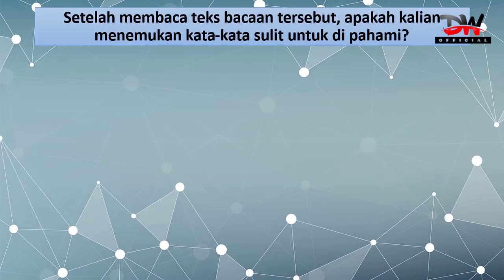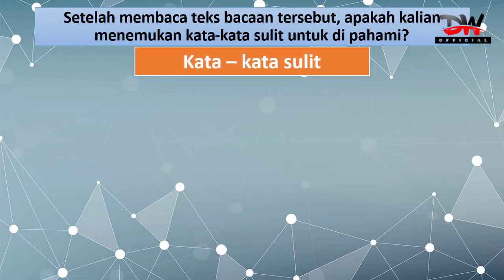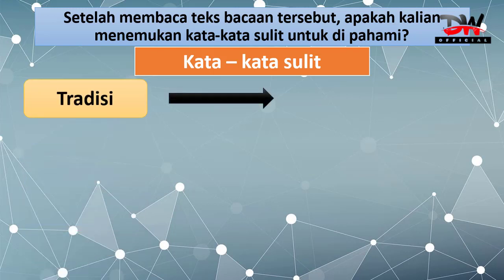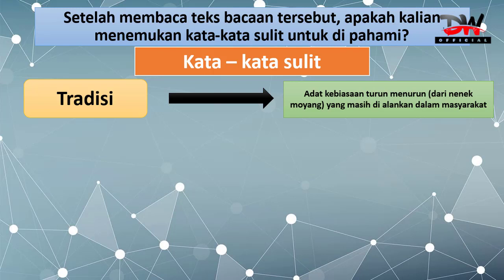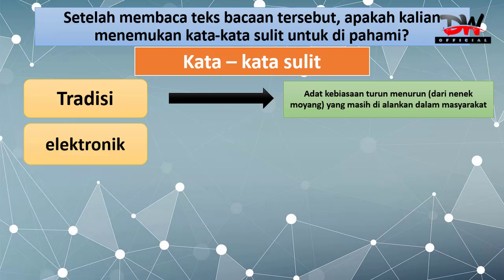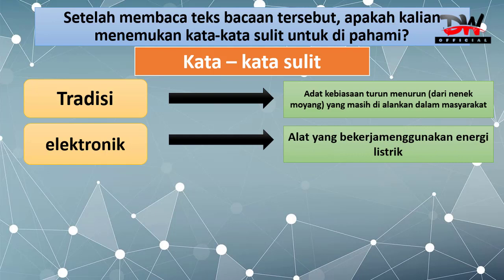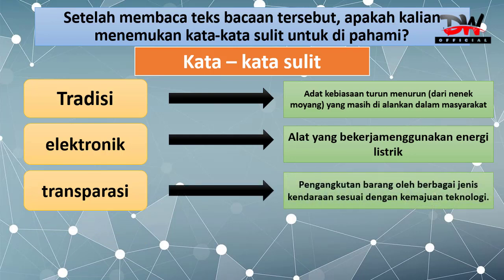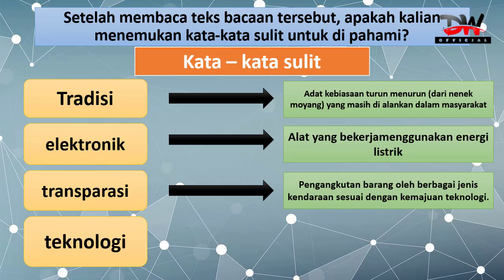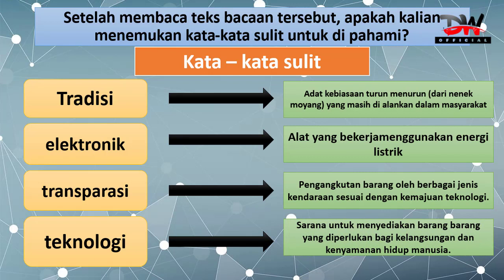Setelah membaca teks bacaan tersebut, apakah kalian menemukan kata-kata sulit untuk dipahami? Kata-kata sulit yang kita temukan di sini adalah: pertama, tradisi, yang artinya adat kebiasaan turun-menurun dari nenek moyang yang masih dijalankan dalam masyarakat. Kedua, elektronik, yang artinya alat yang bekerja menggunakan energi listrik. Ketiga, transportasi adalah pengangkutan barang oleh berbagai jenis kendaraan sesuai dengan kemajuan teknologi.